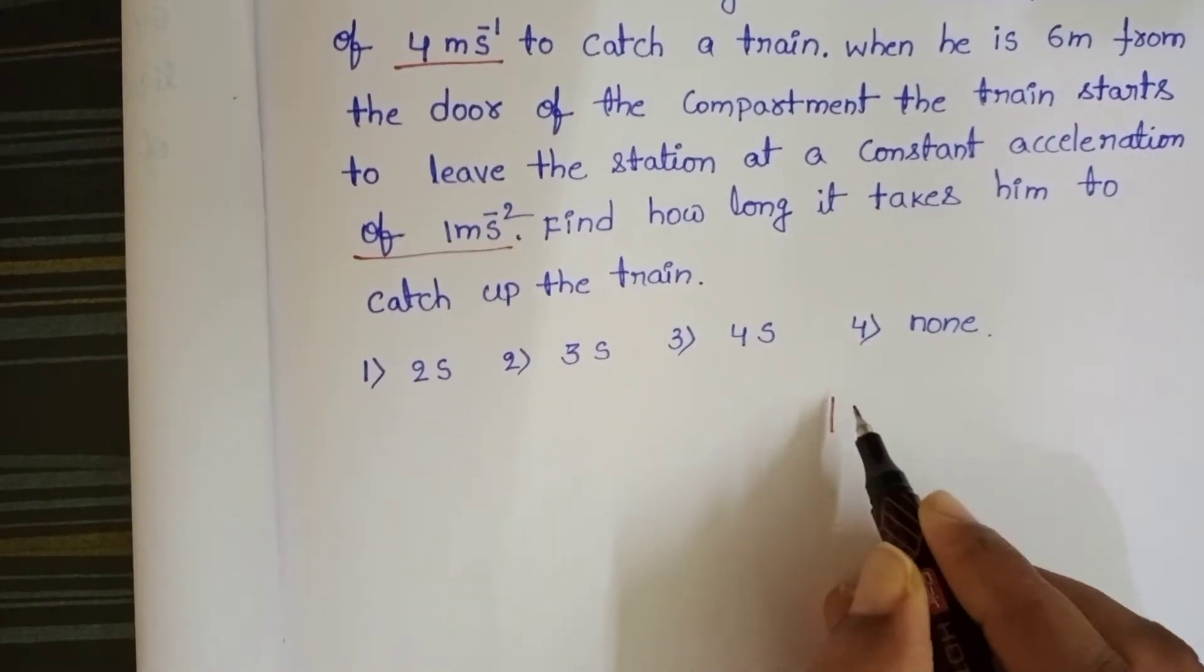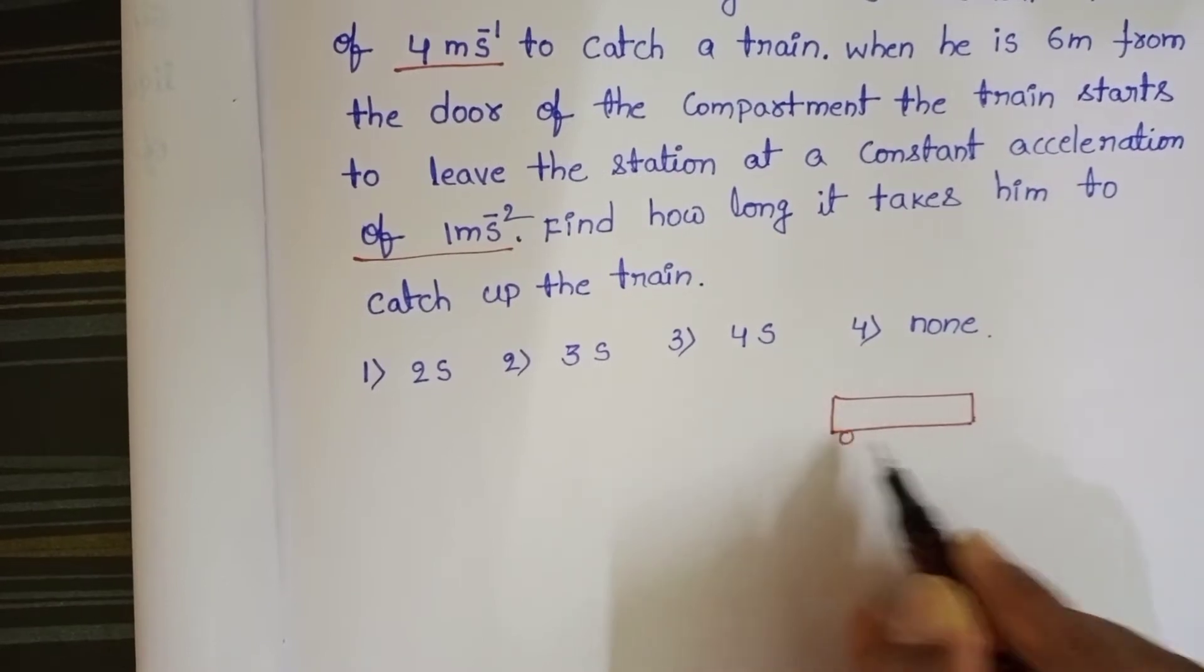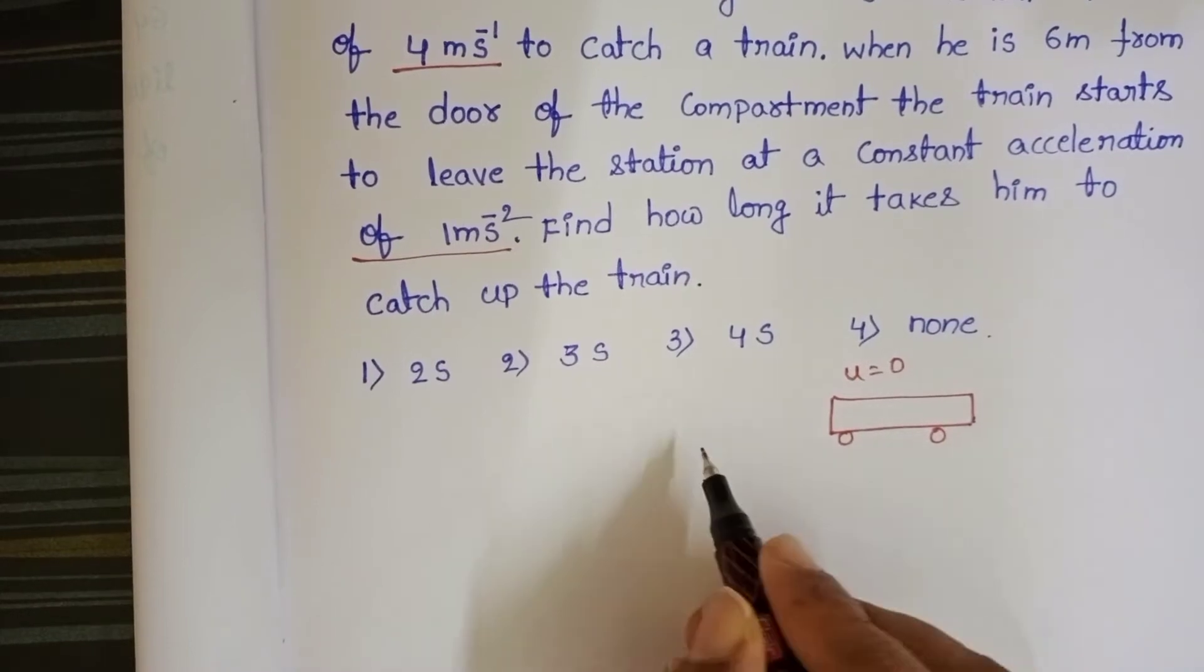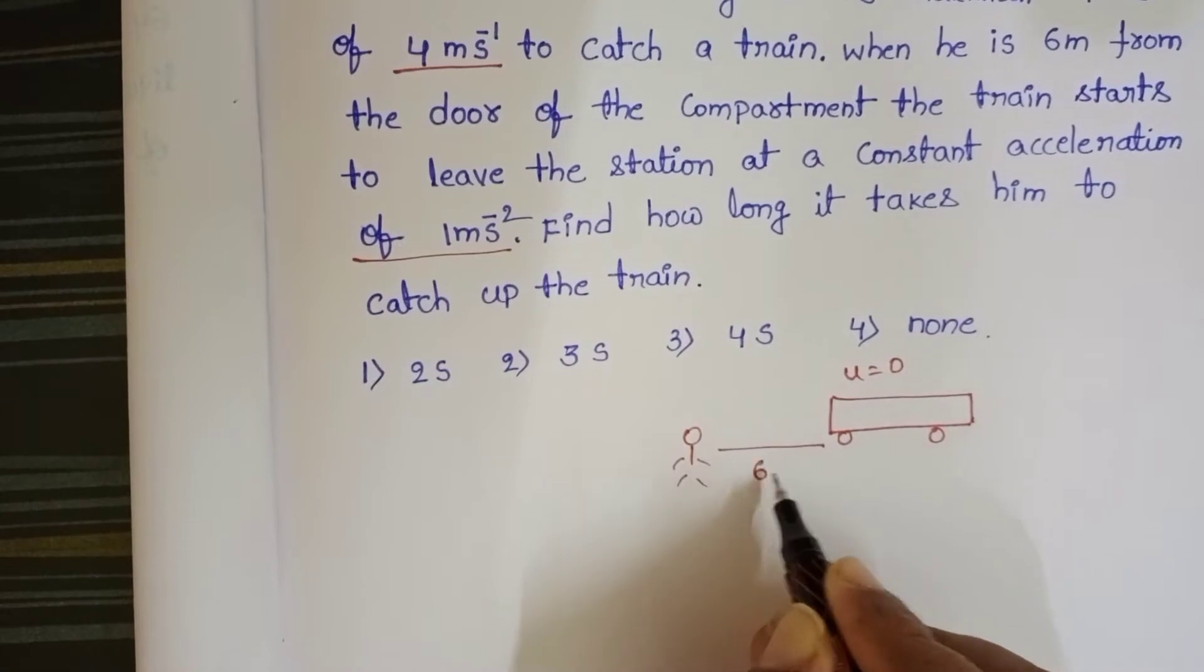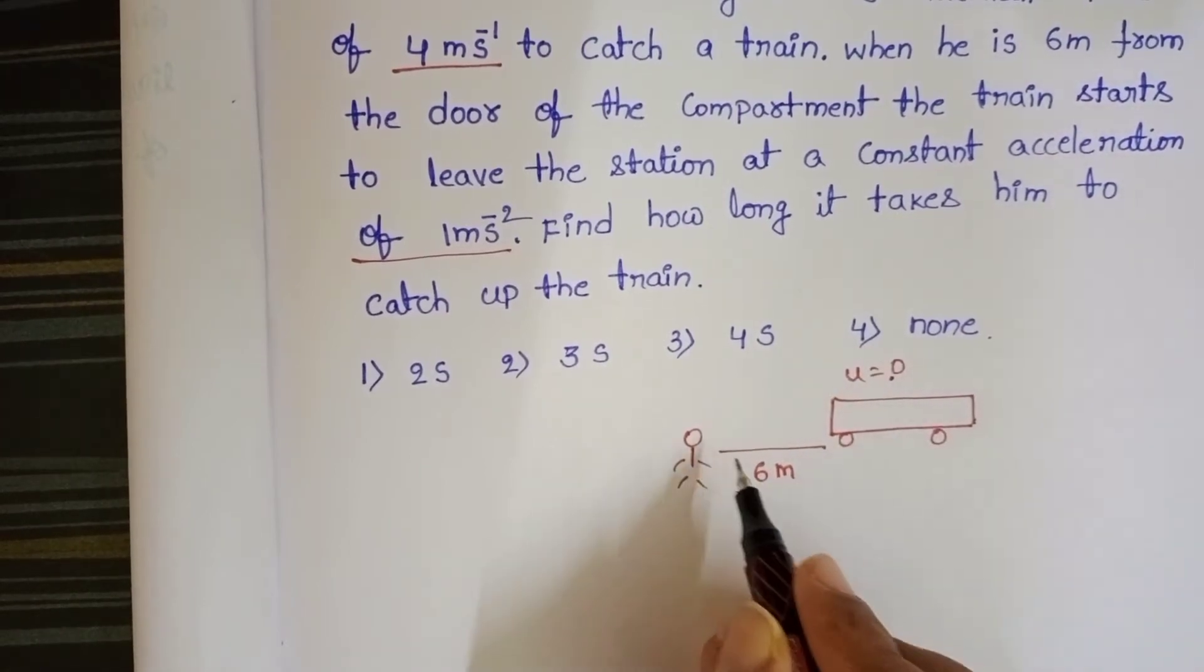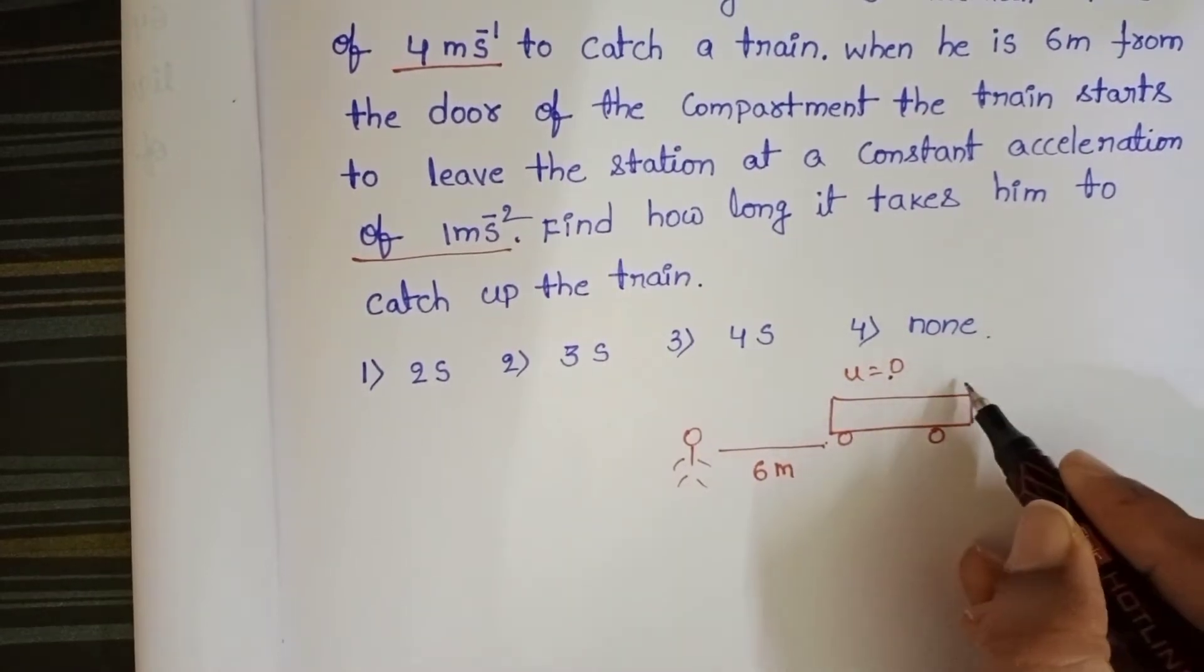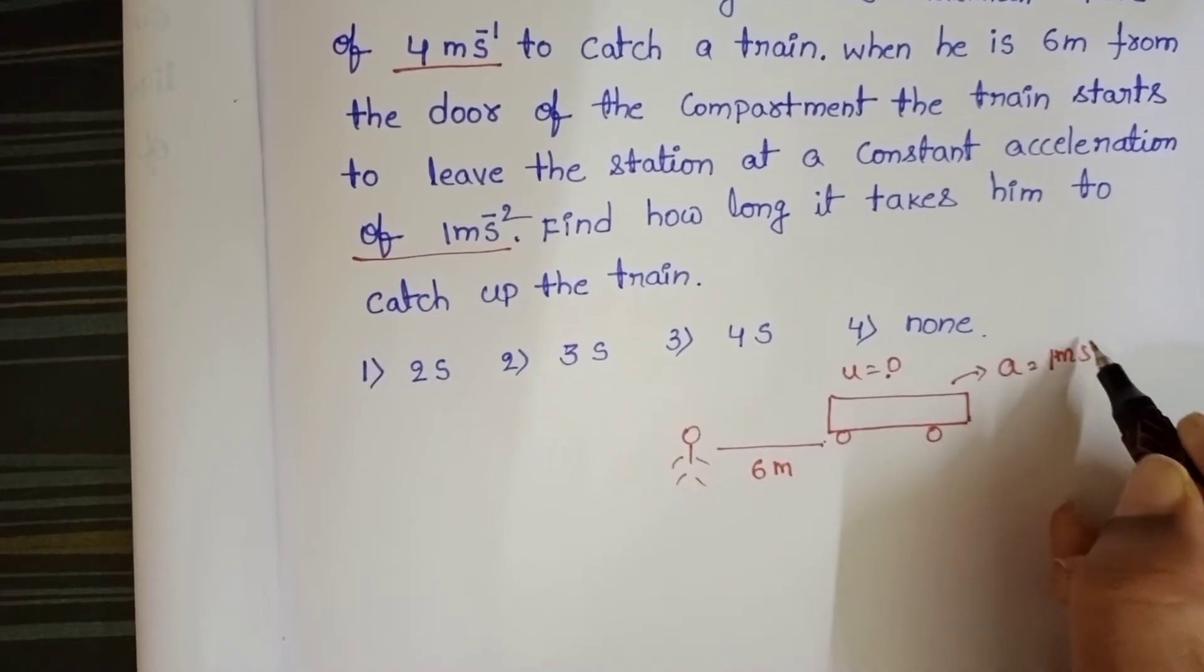In this question, initially a train is at rest position. The initial velocity of the train is zero. And a person is at a distance of 6 meters from the train. Initially, this train is at rest. But exactly when the person is at 6 meter distance from the train, it starts with an acceleration of 1 meter per second squared.